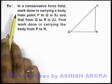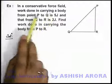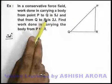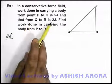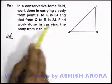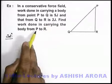This example says that in a conservative force field, work done in carrying a body from point P to Q is 5 joules, and that from Q to R is 2 joules. We are required to find the work done in carrying the body from position P to R.